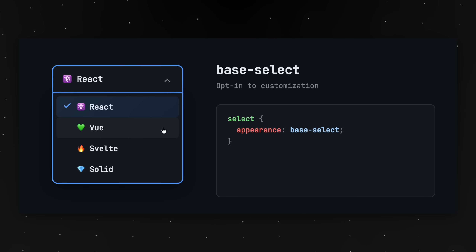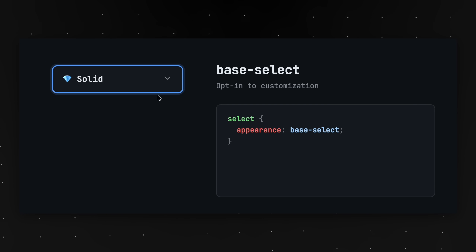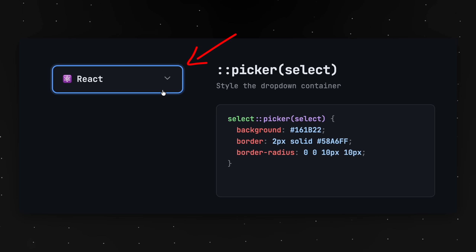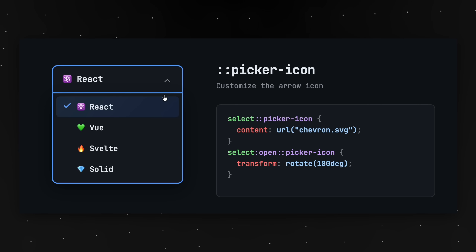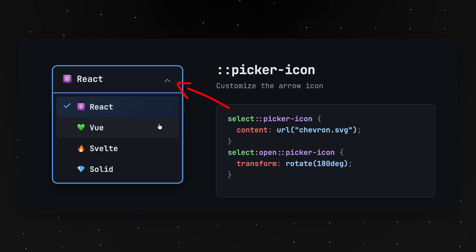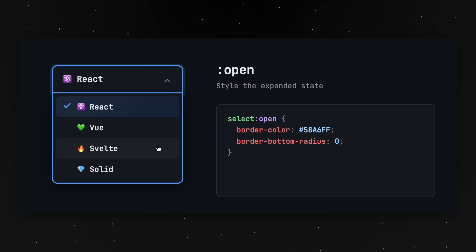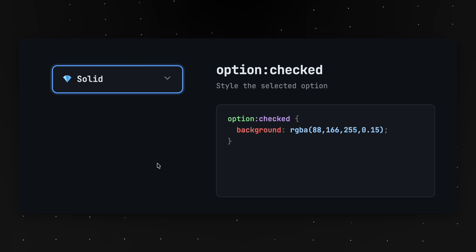Our next few features are all about using less JavaScript, starting with feature number 3, which is a long-awaited one. You can finally style HTML selects — it is absolutely crazy that it took this long. You can opt into this by setting the appearance to base-select, and from here we're able to style things like the picker, essentially just the main select box, the picker icon where we can animate things based on the open and close state — great for a chevron. We can then style the open state of the select, and then we can style those individual options.